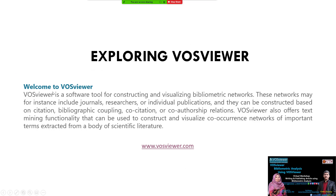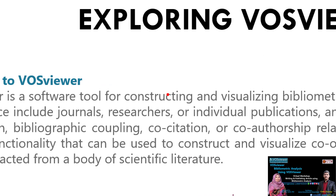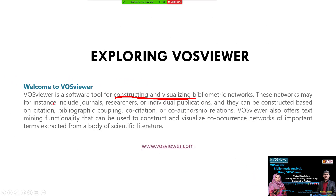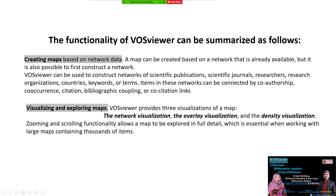VOSviewer is a software tool for constructing and visualizing bibliometric networks. This network might include, for instance, journals, researchers, or individual applications, and so on. A map can be created based on a network that is already available, but it is also possible to first construct a network. VOSviewer can be used to construct networks of scientific publications, journals, researchers, research organizations, countries, keywords, and more.